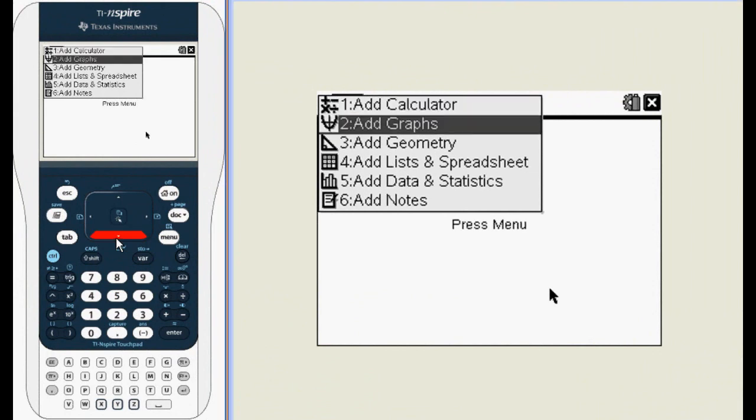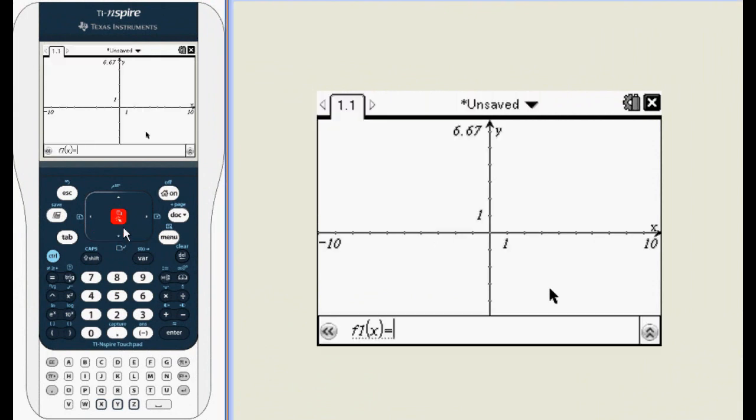Start by opening a new graph window on your Inspire. First we'll enter the function x squared minus 4.